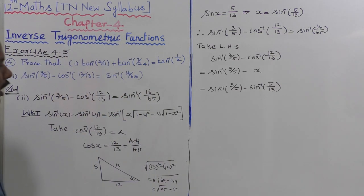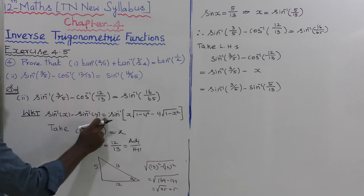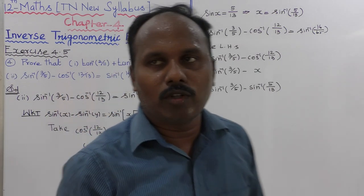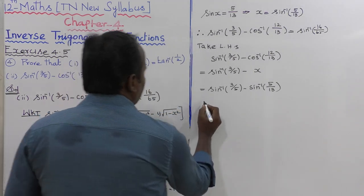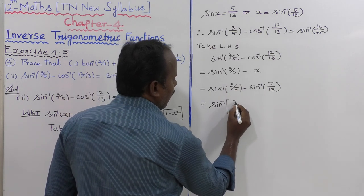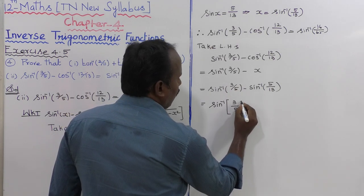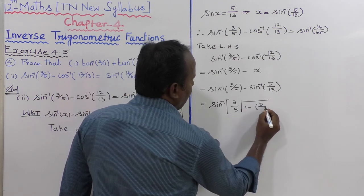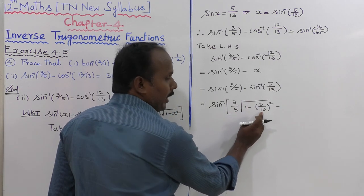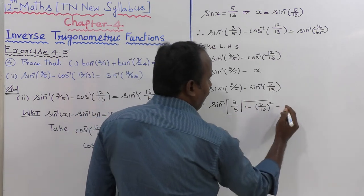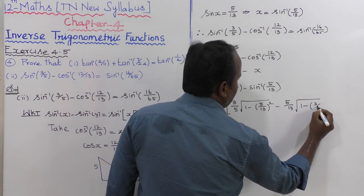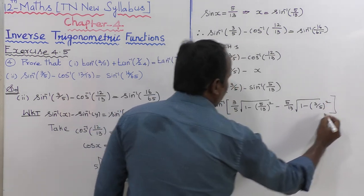Now applying the formula of sin inverse of X minus sin inverse of Y: that equals sin inverse of X into root of 1 minus Y square minus Y into root of 1 minus X square. Here X is 3 by 5 and Y is 5 by 13. So: sin inverse of 3 by 5 into root of 1 minus 5 by 13 whole square, minus 5 by 13 into root of 1 minus 3 by 5 whole square.